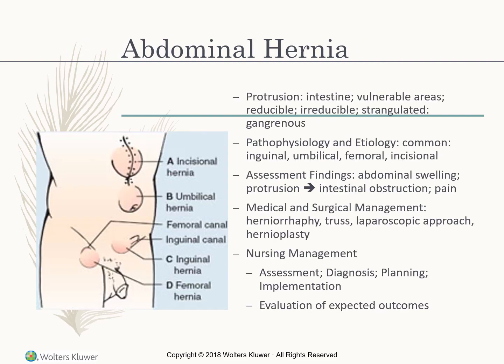An abdominal hernia is a protrusion of the intestine or stomach through vulnerable areas. If reducible, the provider may push the organ back inside. If irreducible, the organ cannot be pushed back in. If the blood supply becomes cut off — strangulated — it can become gangrenous.